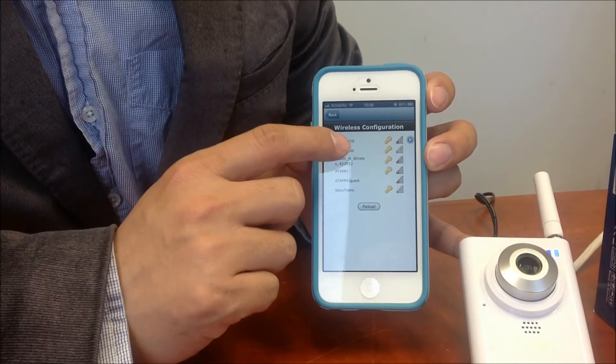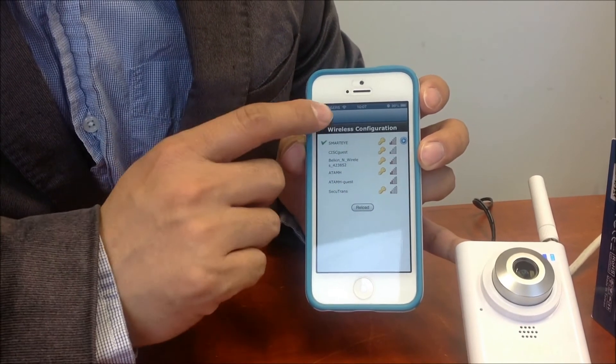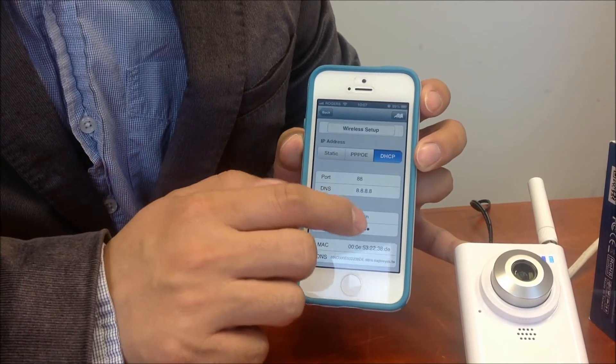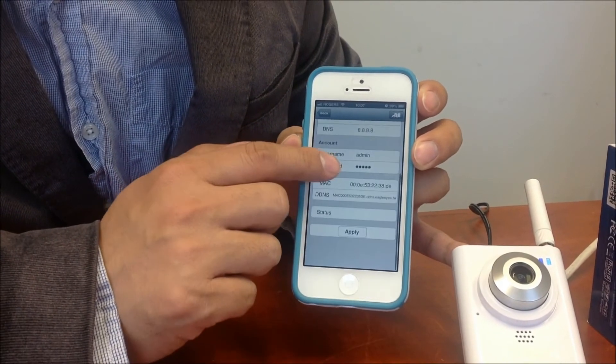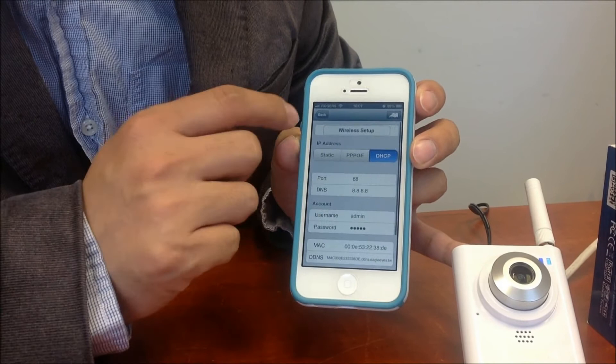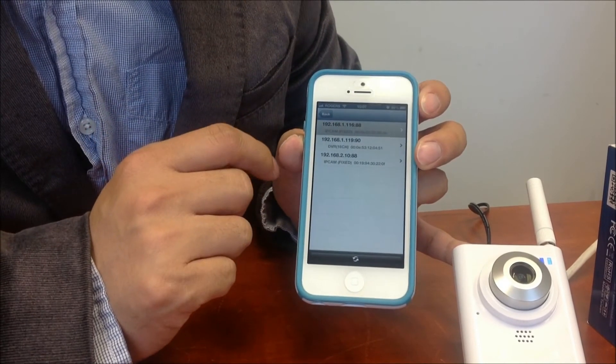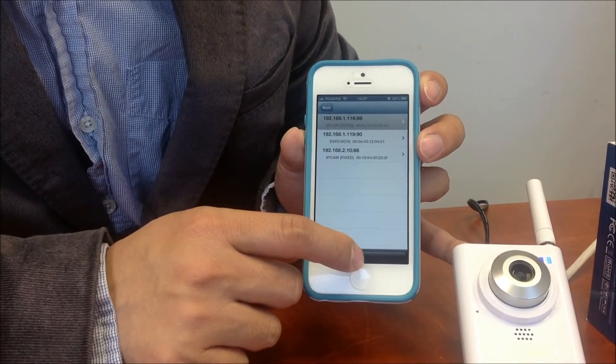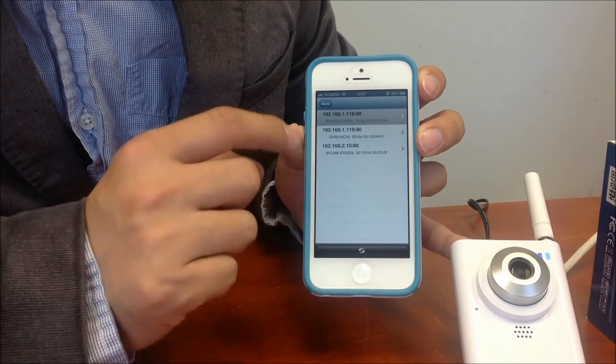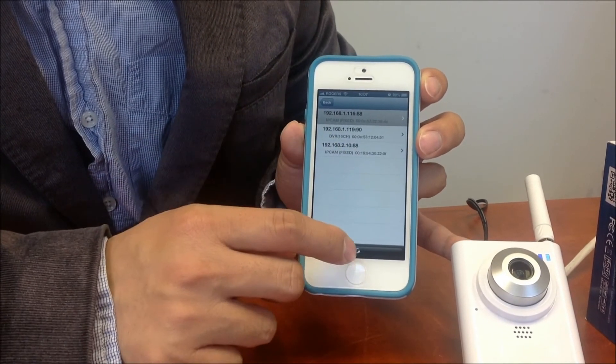Okay, we join the correct network, and then we go back, so we can refresh the camera list, so the Wi-Fi IP address will be changed.